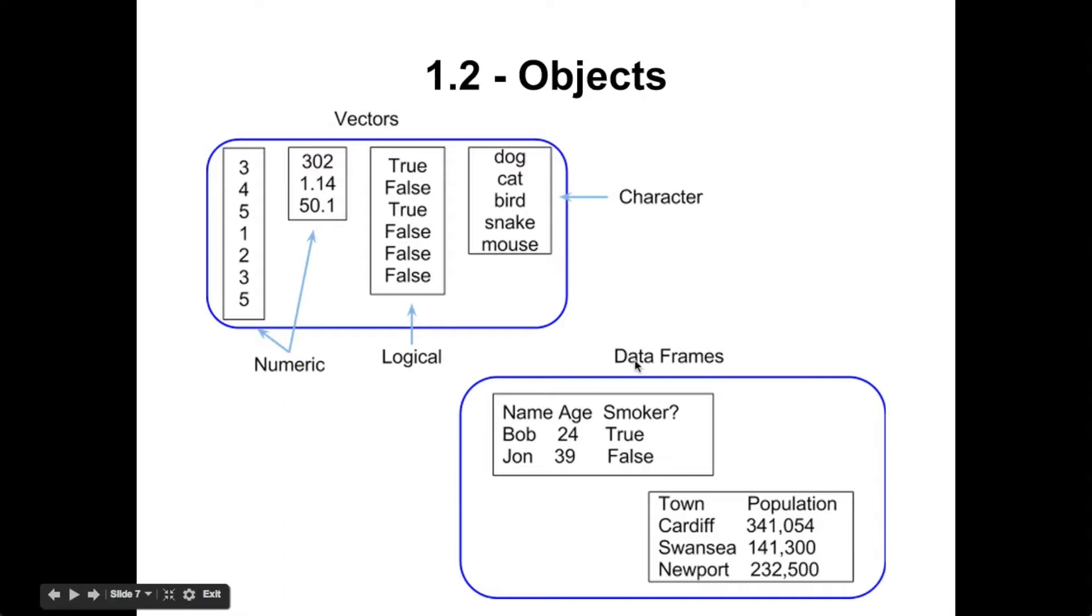And then all data frames are collections of vectors. So here we see the name vector, the age vector, and whether or not this person was a smoker. So we'll move on now to actually creating objects on our own and beginning to actually get our hands dirty with R.